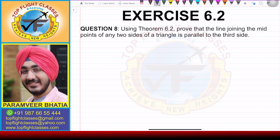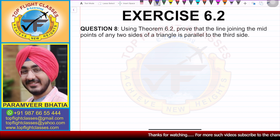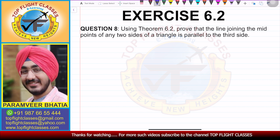In this video, we are going to solve question number 8 of Exercise 6.2. Question number 8 says: using Theorem 6.2, prove that the line joining the midpoints of any two sides of a triangle is parallel to the third side.